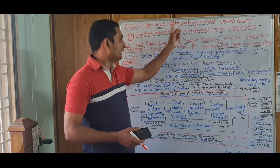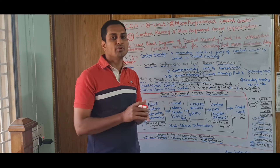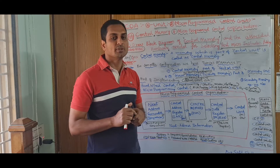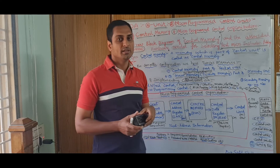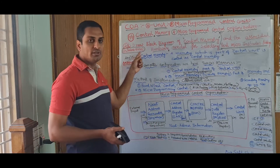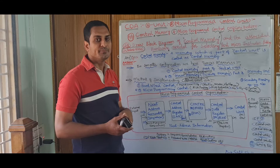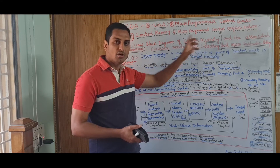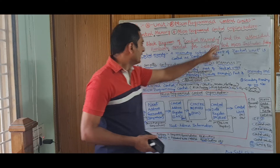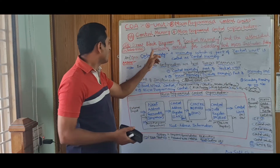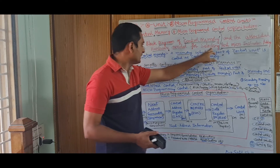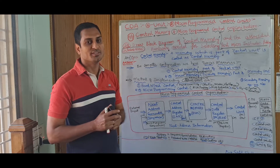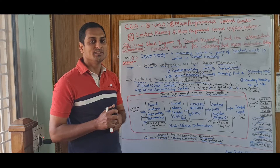I am telling the chapter and unit because in the question paper, you will be confused about which unit and which topic a question is coming from, and which answer you have to attempt. In October 2020, two years back, this question was asked: 'Draw block diagram of control memory and the associated hardware needed for selecting next micro-instruction address.' By seeing this question, you may be confused whether this topic is covered or not.